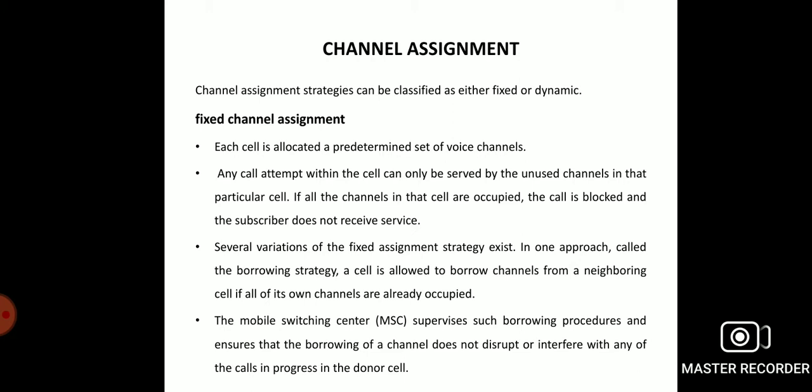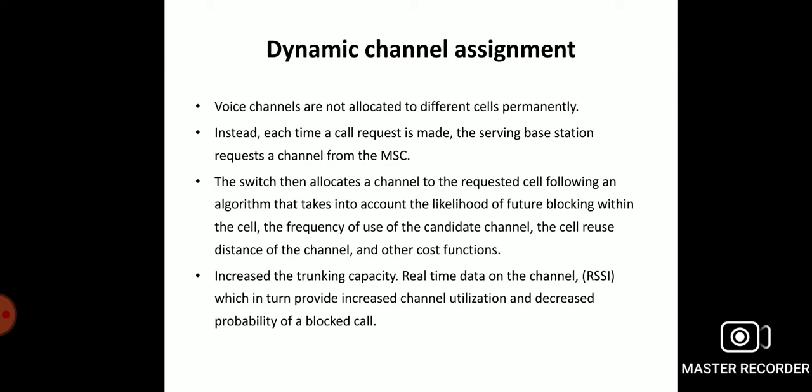Type 2 is Dynamic channel assignment. In this method, the voice channels are not assigned to the cells permanently, but they are assigned according to the rising traffic need of the cells. If there is high traffic, more channels will be allocated to the cells. If the cellular traffic is low, then the cell will be allotted with less number of channels.